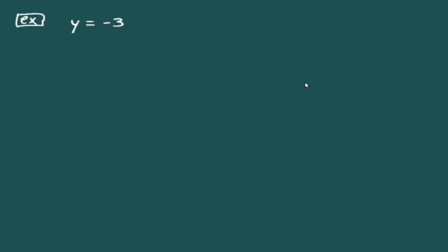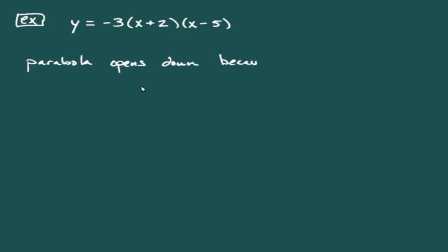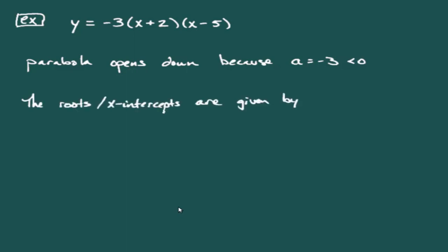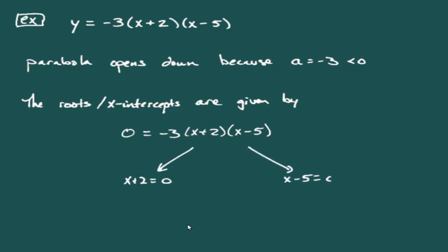Let's look at one more example: y = -3(x + 2)(x - 5). Here a = -3, which is negative, so the parabola opens down. Setting y = 0 and applying the zero factor property: x + 2 = 0 gives x = -2, and x - 5 = 0 gives x = 5. So the x-intercepts are at -2 and 5.